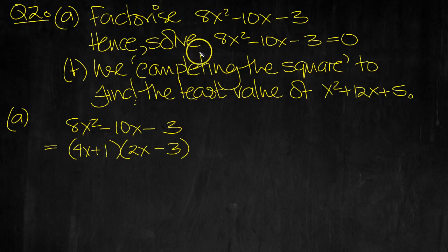So then it says... Let's just double check it. That's 8x². Minus 12 plus 2 is minus 10. And plus times minus is a minus. 3×1s are 3. Yeah, that's fine. So that equals 0 then.